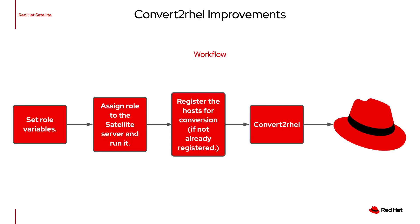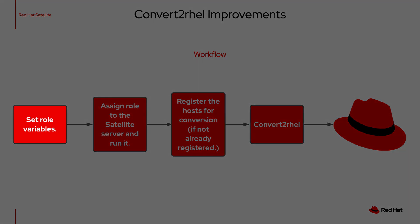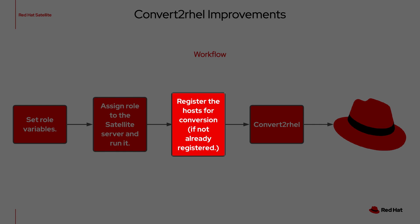There are far more steps with Satellite 6.10. Here's a rough outline of how it works in 6.11. First, you set the role variables — these include things like adding a new manifest to add subscriptions. Second, you assign the role to the Satellite server and run it, which adds the required content like the convert to RHEL repository. Third, you register the desired hosts if you have not already done so. And finally, you run the convert to RHEL playbook against the hosts.